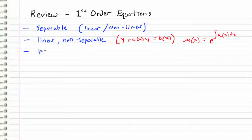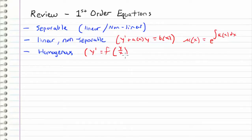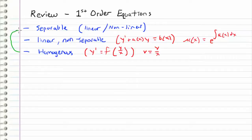The third type that we looked at were homogeneous equations. These were equations that we were able to write y prime as a function of a single variable y over x. If we were able to write y prime as a function of y/x, then we used a change of variables substituting v equal to y over x. This change of variables turned the equation into a separable differential equation that we could solve using straight up integration.